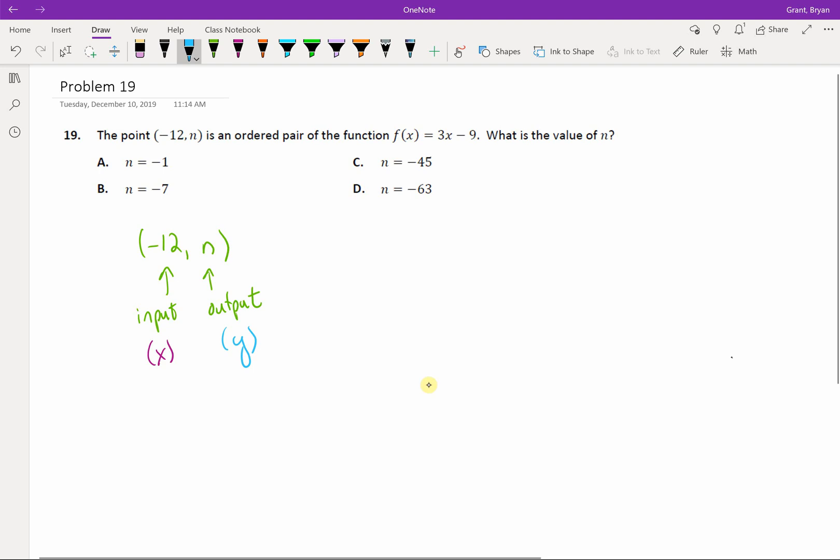And in this case we know the input's negative 12, they're looking for the output. And then they said, well here's a cool function where in order to find the output, and I should do better with colors there, our output is created using a function of x. A function of x means our output is going to be found by doing a formula that involves x. And what is the formula that involves x?